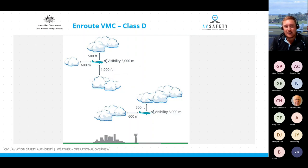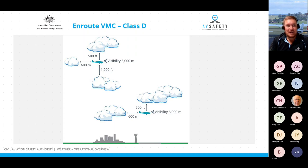When flying in Class D airspace, our separation from cloud is 500 feet below cloud and 1,000 feet above cloud, with a flight visibility of 5,000 metres and 600 metres horizontal distance from cloud.